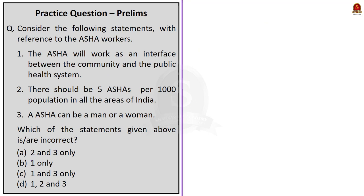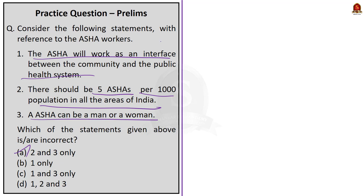Question 2 is about ASHA workers. Statement 1 — ASHA will work as an interface between the community and the public health system. Statement 2 — There should be five ASHAs per thousand population in all areas. Statement 3 — An ASHA can be a man or a woman. The correct answer is option A — Statements 2 and 3 only are incorrect. Statement 1 is correct; statement 2 is wrong because there should be one ASHA per thousand population; statement 3 is wrong because ASHA must be a woman aged 25–45 years.